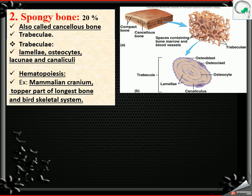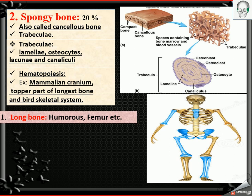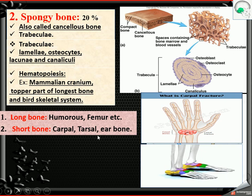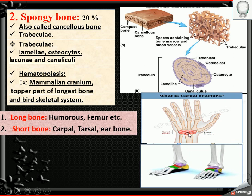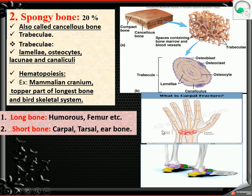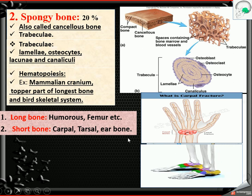Now, according to shape, the first type is long bone. Examples of long bone include humerus, femur, tibia, fibula, and radius. Short bone — examples include carpal bone, tarsal bone, and the ear bones.